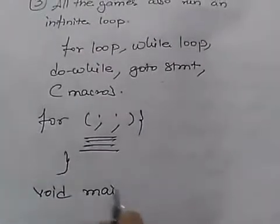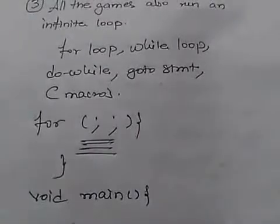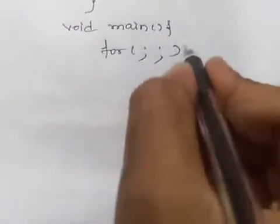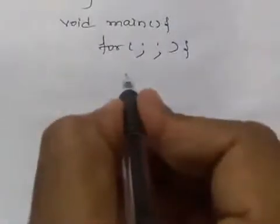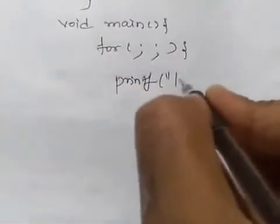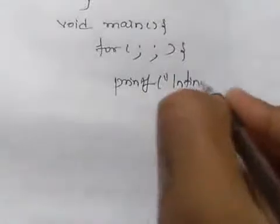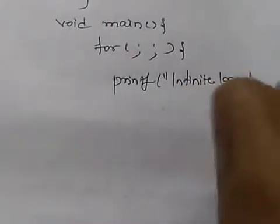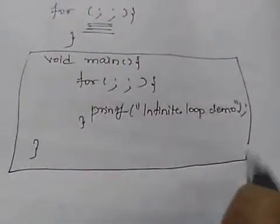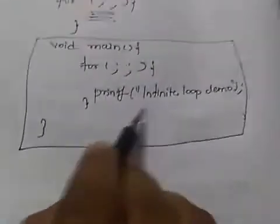We have created a main function. Inside the main function we have used a for statement. We create a for loop just like that and give a print statement to print 'infinite loop'.